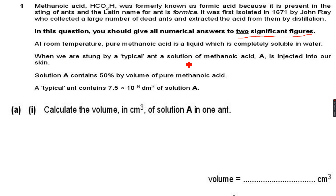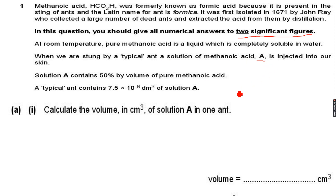At room temperature, pure metanoic acid is a liquid which is completely soluble in water. When we are stung by a typical ant, a solution of metanoic acid A is injected into our skin. Solution A contains 50 percent by volume of pure metanoic acid, so 50 percent is metanoic acid and 50 percent is something else, probably water.